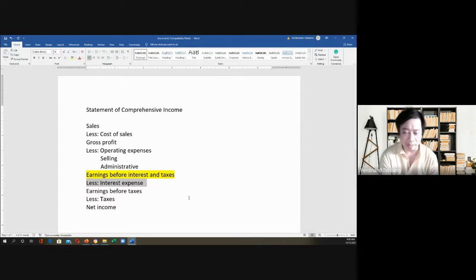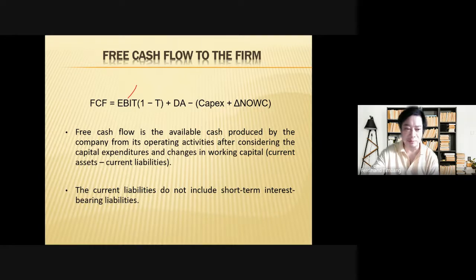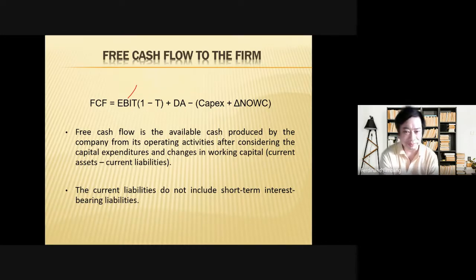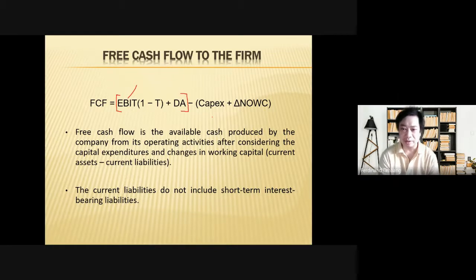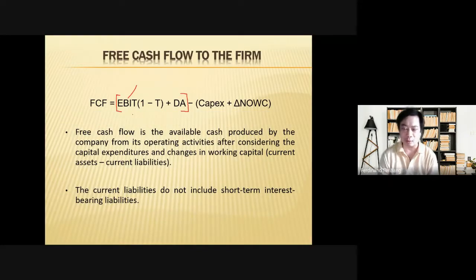So in the statement of comprehensive income, the reason why we are excluding the interest expense in the computation — if you look here, we have the EBIT only but we deduct the taxes. The theory here is that T is the tax rate. The formula actually has a parenthesis, and we are not including the interest expense in this formula, so we only have EBIT minus one minus T.